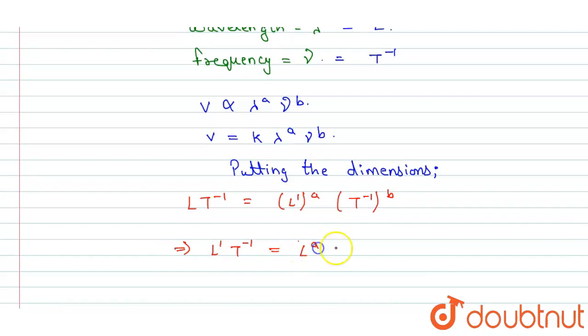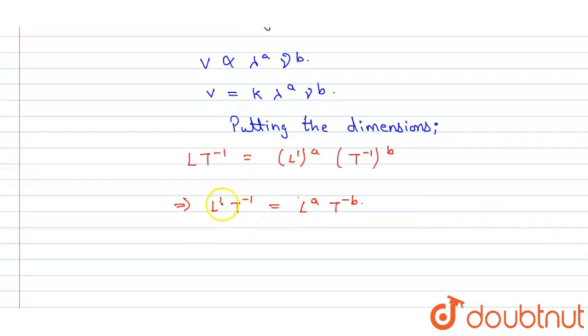So now match left hand side and right hand side, so we get the values of a and b. The value of a will be one, and the value of minus b equals minus one, which means b equals one.